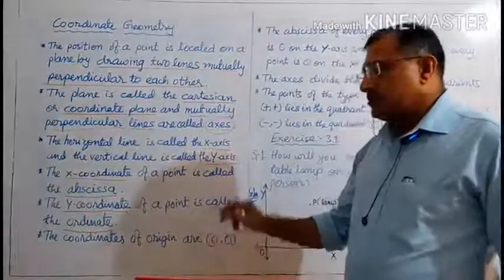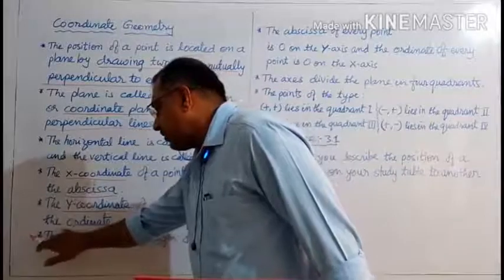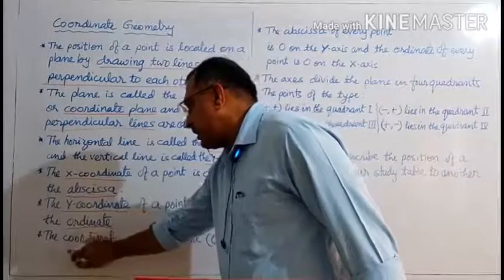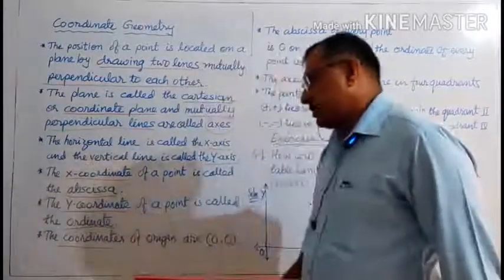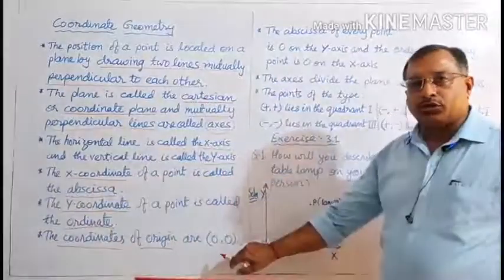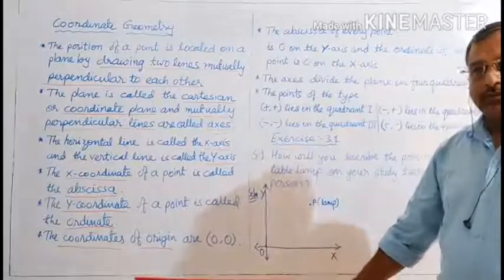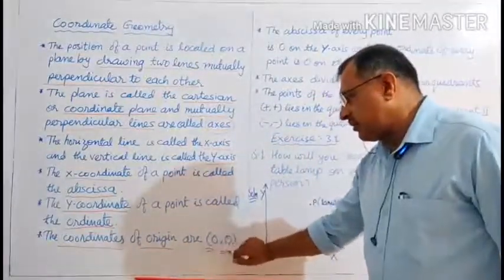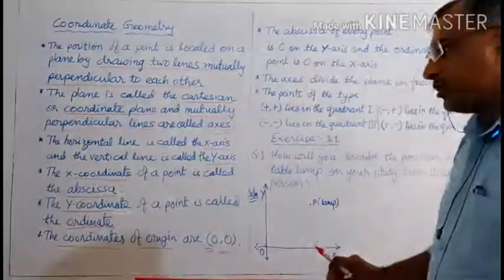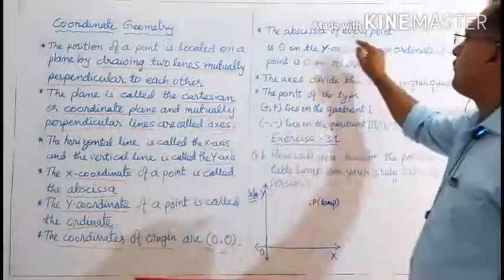The coordinates of the origin — origin means the point where these two perpendicular lines intersect. The coordinates of the origin are (0, 0). The abscissa, that is the X coordinate, of every point on the Y axis is 0.